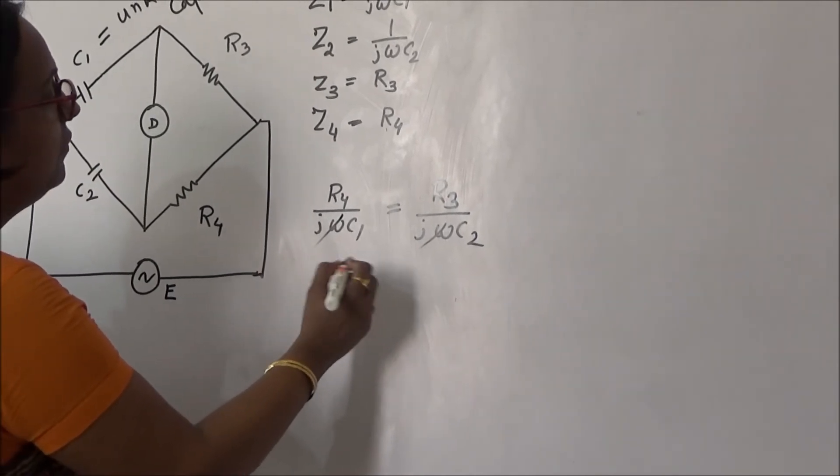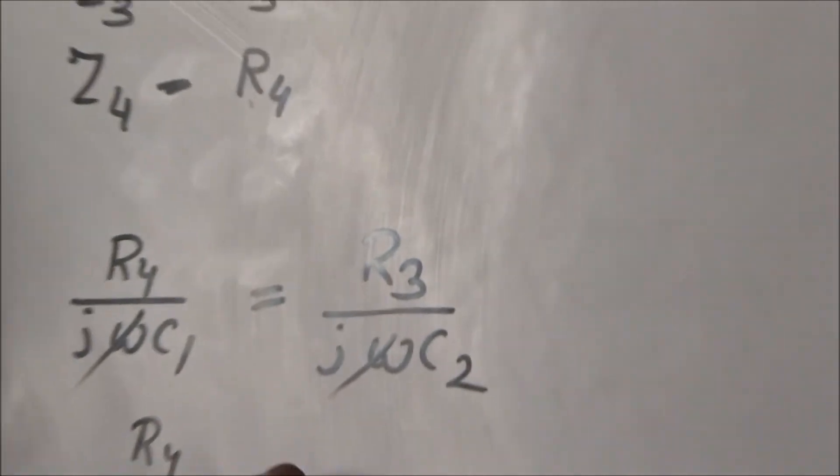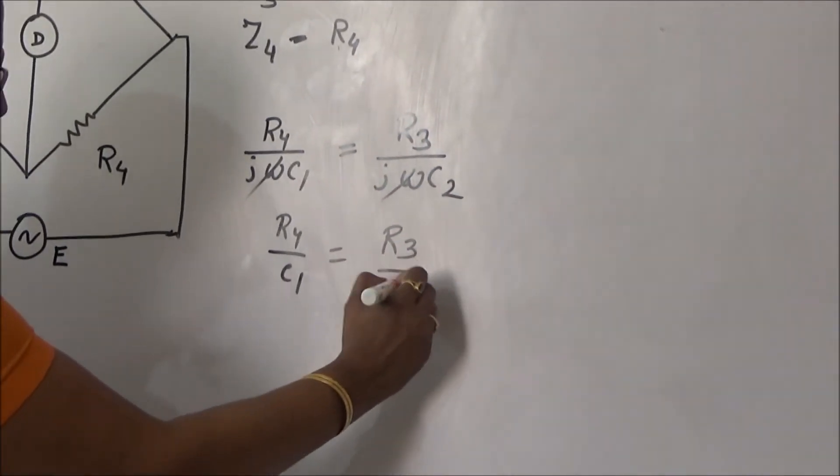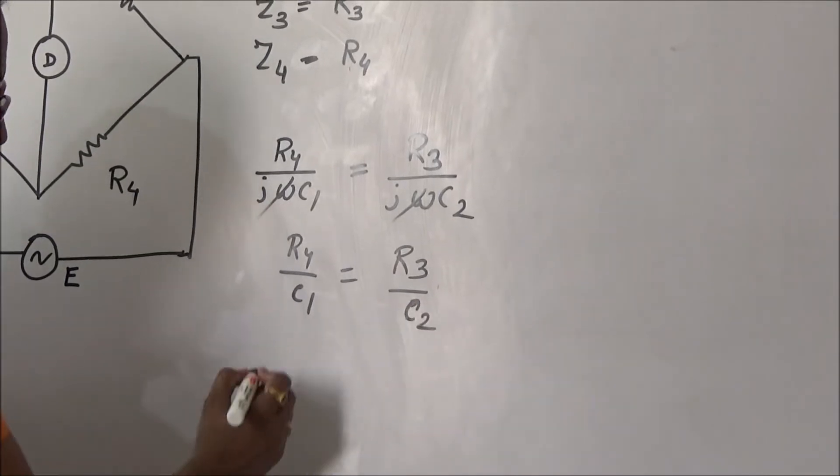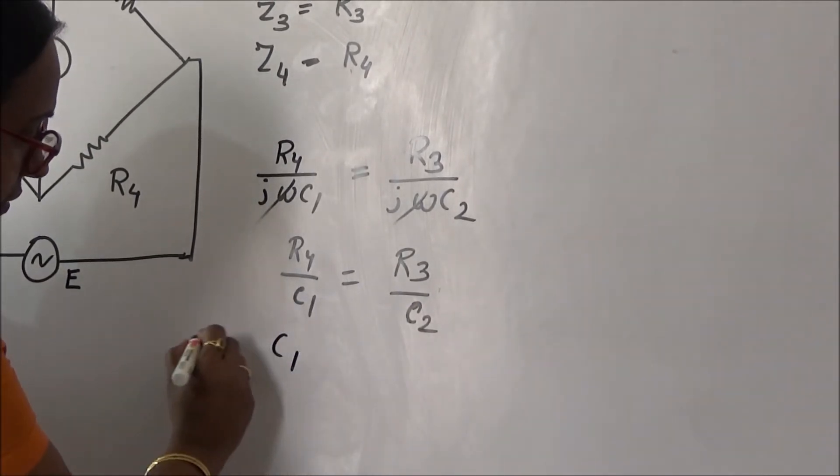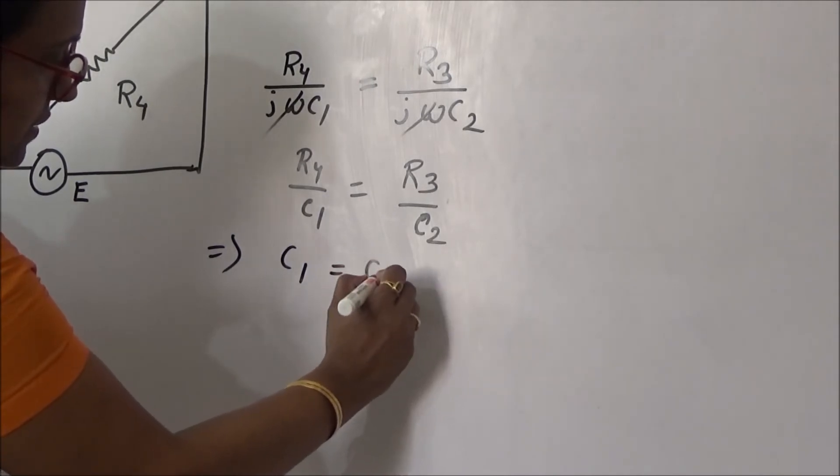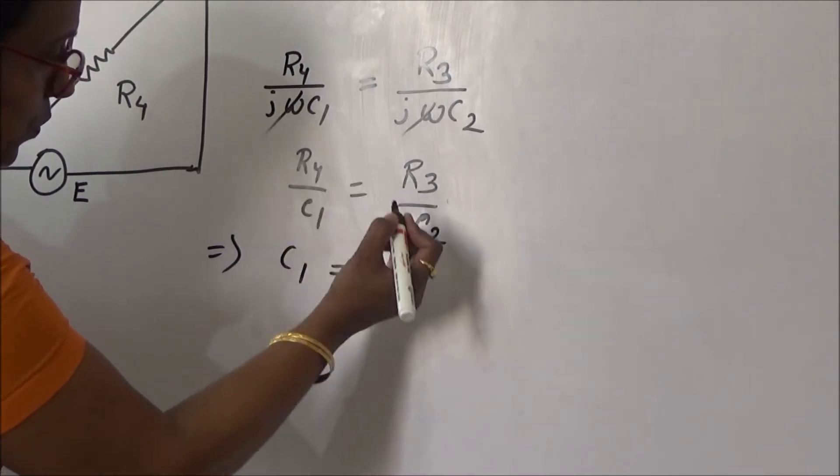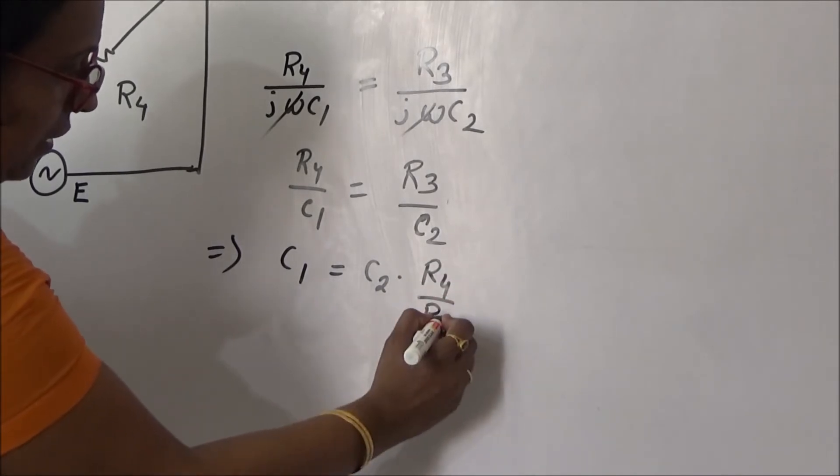So we have R4/C1 is equal to R3/C2. This implies C1 is equal to C2·R4/R3.